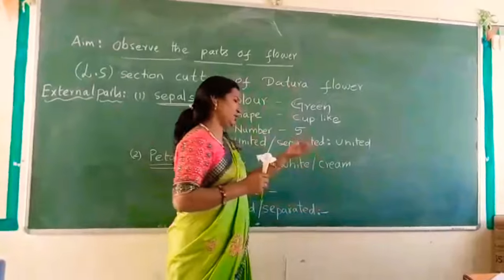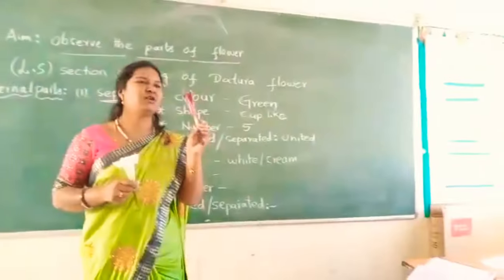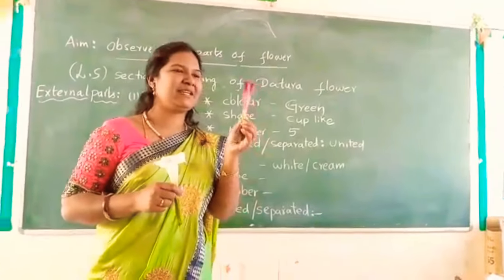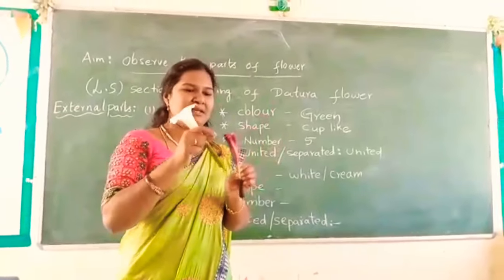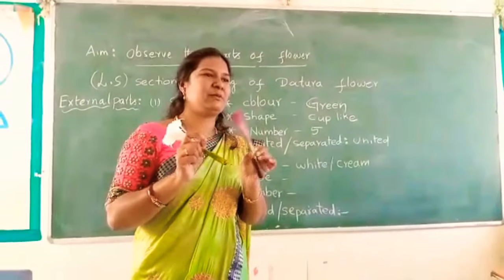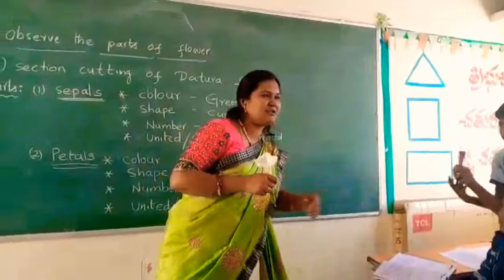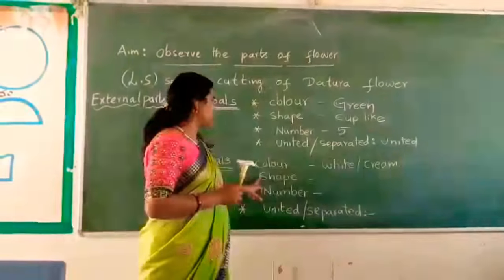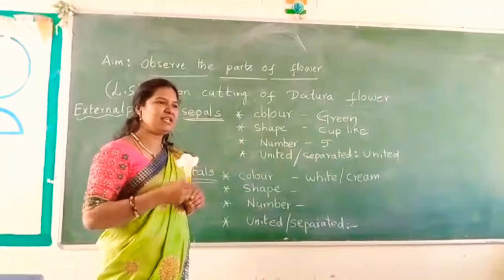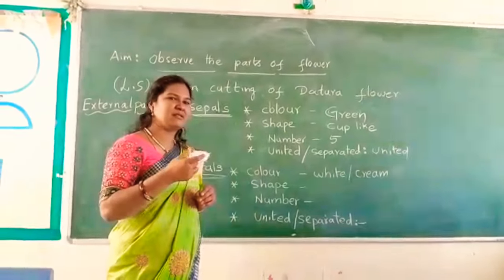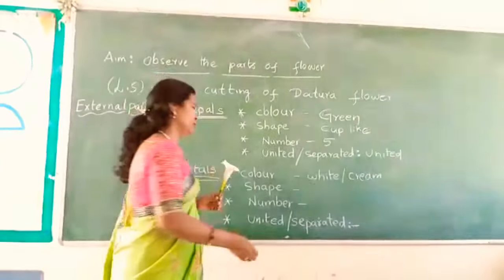Give me your datura flower. See, this is also a datura flower, but it is a varied color — it seems like purple. Good collection! So, shape of the petal. What is the shape of the petal? Funnel — funnel shape.